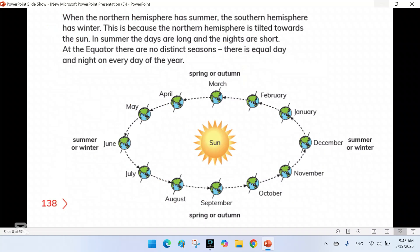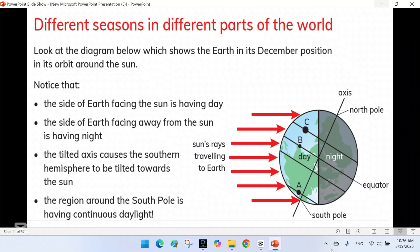Different seasons in different parts of the world. Seasons vary in different parts of the world based on their location relative to the equator.